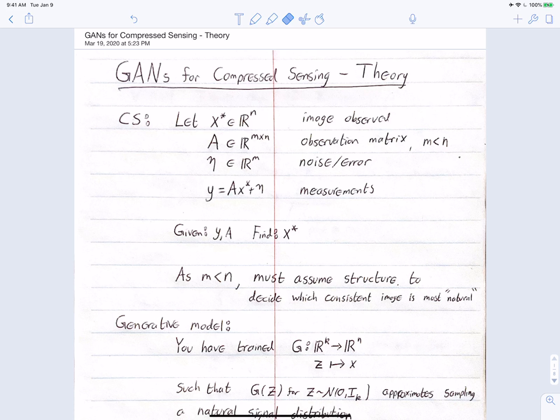This is a problem where we have an image x*, which lives in R^n. We have an observation matrix A, which is an m by n matrix that takes this n-dimensional image and gives us m measurements. We also have eta, a noise vector in R^m, and so our measurements are given by y = Ax* + eta.